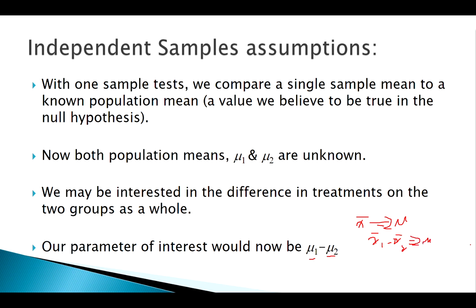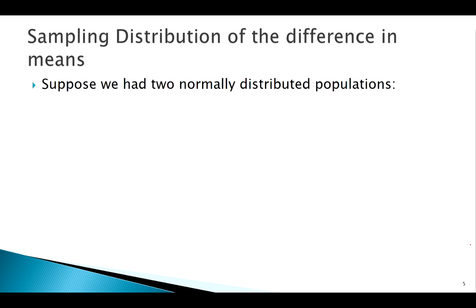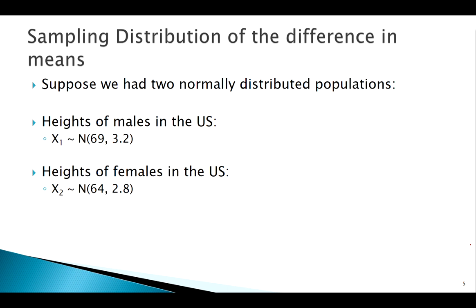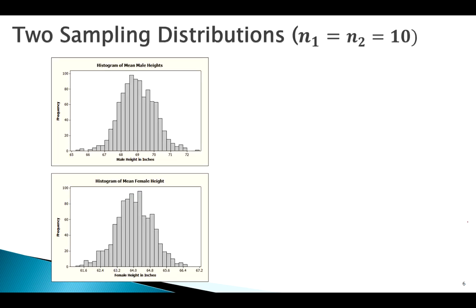We use x̄₁ minus x̄₂ to estimate mu₁ minus mu₂. So our point estimate is x̄₁ minus x̄₂, and we need to understand what the sampling distribution of x̄₁ minus x̄₂ looks like. Let's start by assuming normal populations — the normal distribution is easy to work with. For example, height is typically normally distributed, so say we have the height of males: normally distributed with its specific population mean and standard deviation.